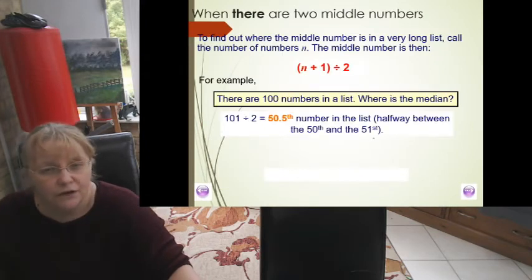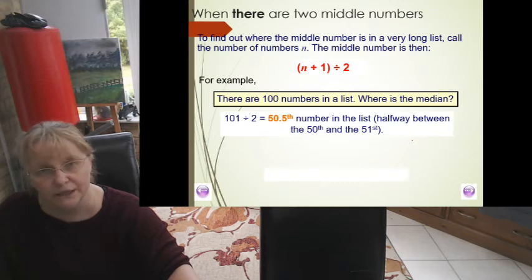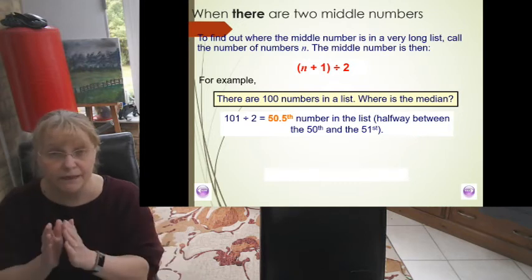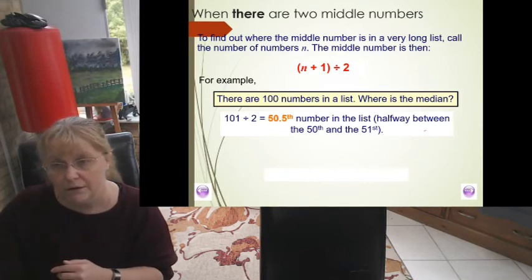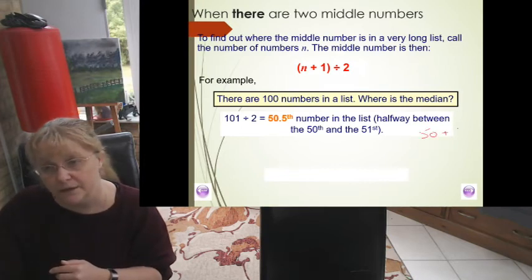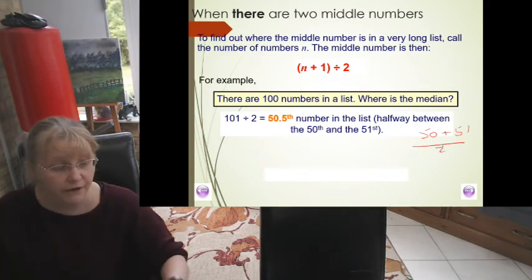So if we say 100, we know that's 100 plus 1 divided by 2, so the middle number would be 50.5, or the 50th number plus the 51st number over 2, which of course is 50.5.